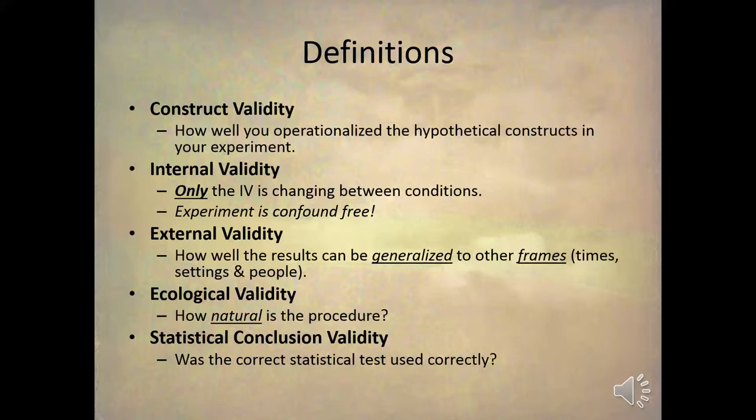Construct validity is how well you operationally define the hypothetical constructs in your experiment. We've talked about constructs such as 'helping,' and operational definitions such as the number of boxes that you'll move. Construct validity is about how well thought out those operational definitions are.